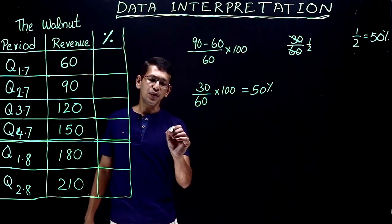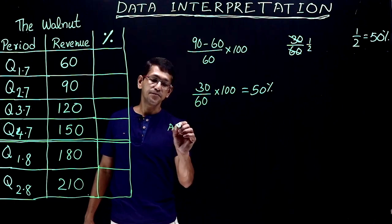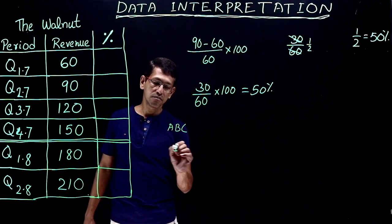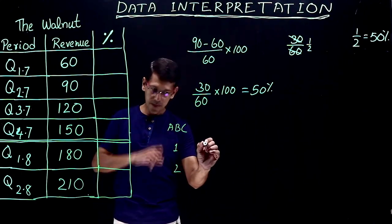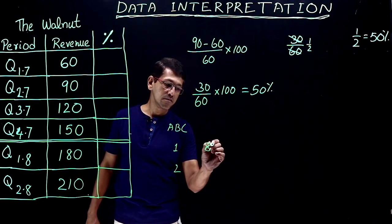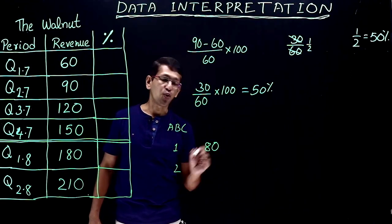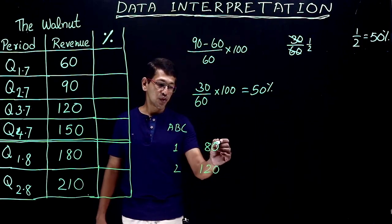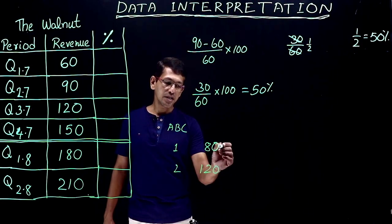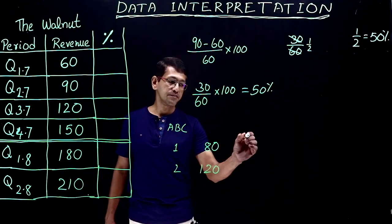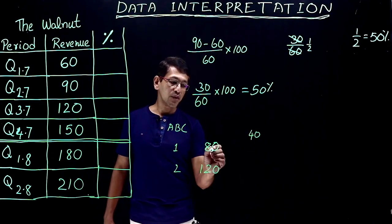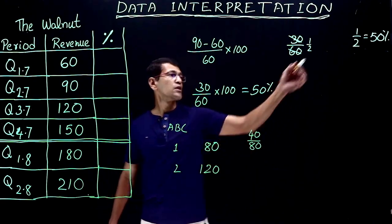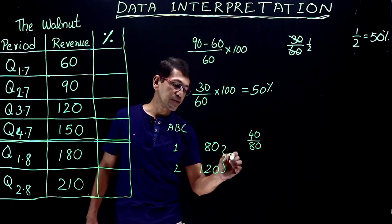Here's another example. A company ABC — year 1 revenue is 80 crores and year 2 revenue is 120 crores. What is the percentage increase? 80 to 120: the increase is 40, and the base year is 80. So 40 by 80 equals 1/2, which is 50 percentage. So the actual increase is 50 percentage.